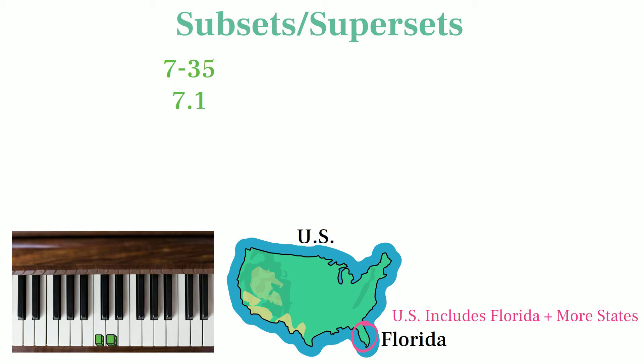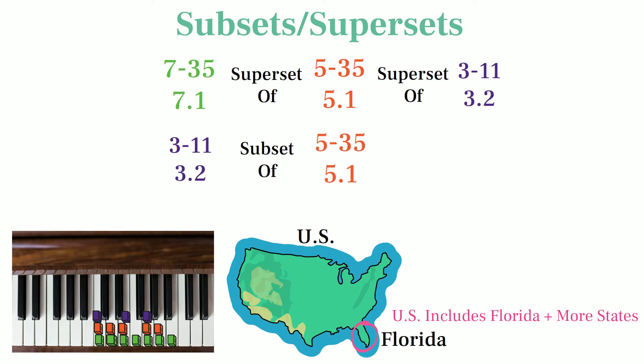We can think of a set like the major scale as a superset for smaller sets like the pentatonic scale and the major triad, because those sets are present within the major scale. In turn, we would say that the major triad and the pentatonic scale are subsets of the major scale.